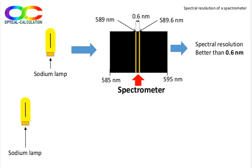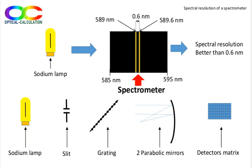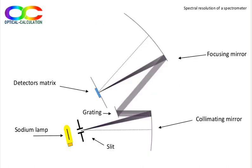Let's say that we have available in our lab a sodium lamp, a slit, a grating, two parabolic mirrors and a matrix of detectors. We can make a spectrometer with a slit placed in front of the source. One of the parabolic mirrors is used off-axis to collimate the beam that will illuminate the grating, and the other parabolic mirror is used to focus the diffracted beam on the detectors.